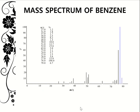This is the mass spectrum of benzene, where the base peak is at 78 — that is the mass-to-charge ratio. The relative abundances are shown on the y-axis. Clearly the base peak is the molecular ion peak, and then of course there are other fragment peaks.